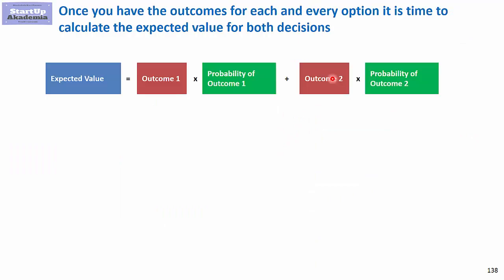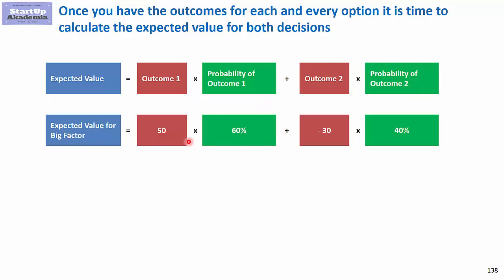We calculate the expected value of each option: the outcome multiplied by the probability of that outcome, summed across both scenarios. For the big factory we have 50 million multiplied by 60%, minus 30 million multiplied by 40% — that is the small demand result and its probability.